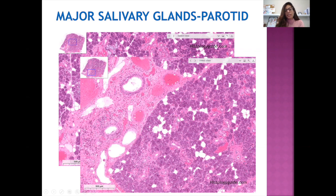I wanted to explain the ductal normal histology. The smallest ducts within the lobules are the intercalated ducts, which can be difficult to identify at low power. The next size up are the striated ducts with columnar eosinophilic epithelium. The largest are the excretory ducts, which have a second layer at their base. The acinar epithelial cells and intercalated ducts are lined by myoepithelial cells, whereas the striated and excretory ducts are lined by basal cells. This becomes important when we look at immunohistochemistry.